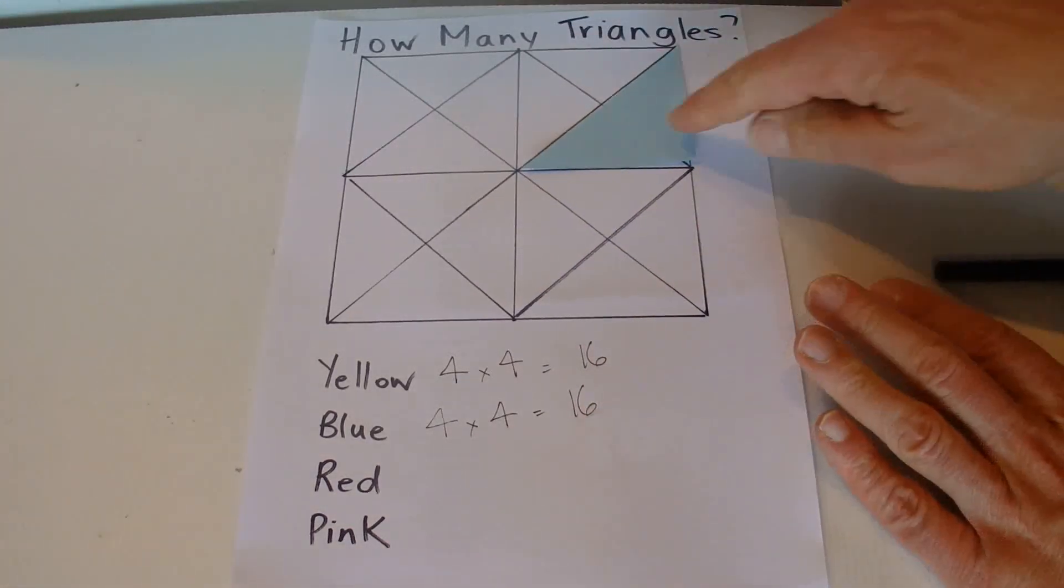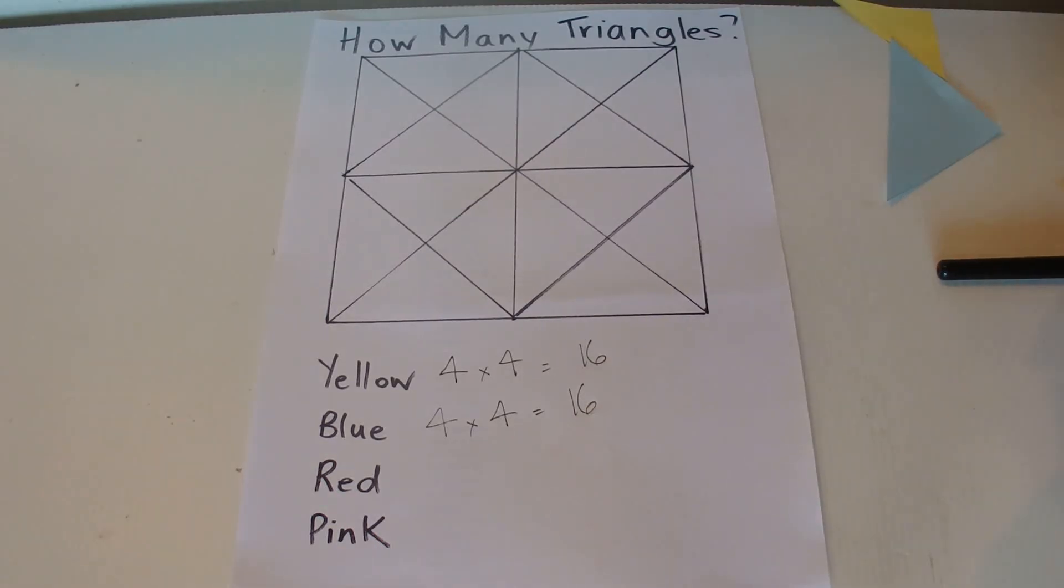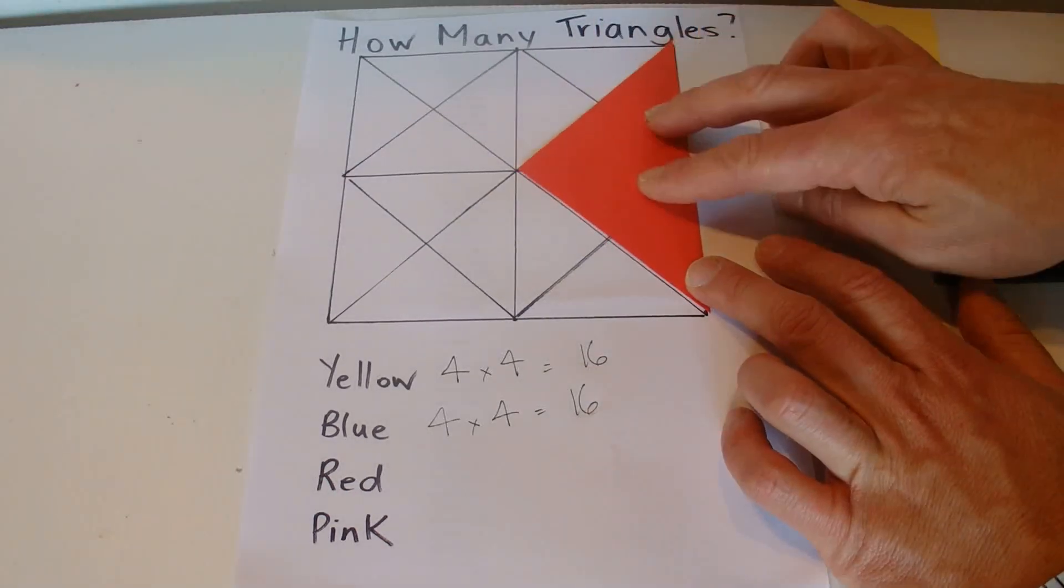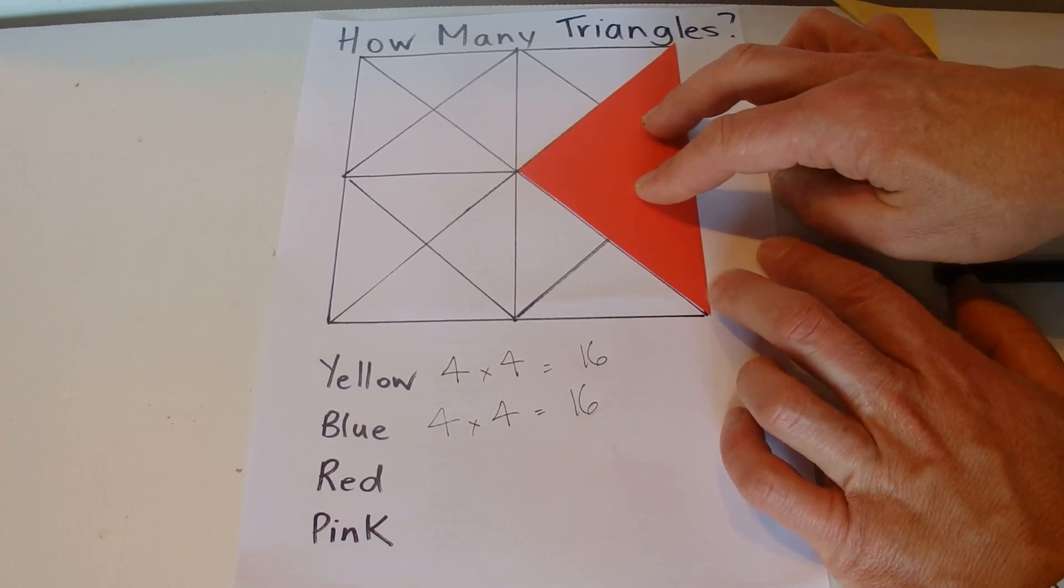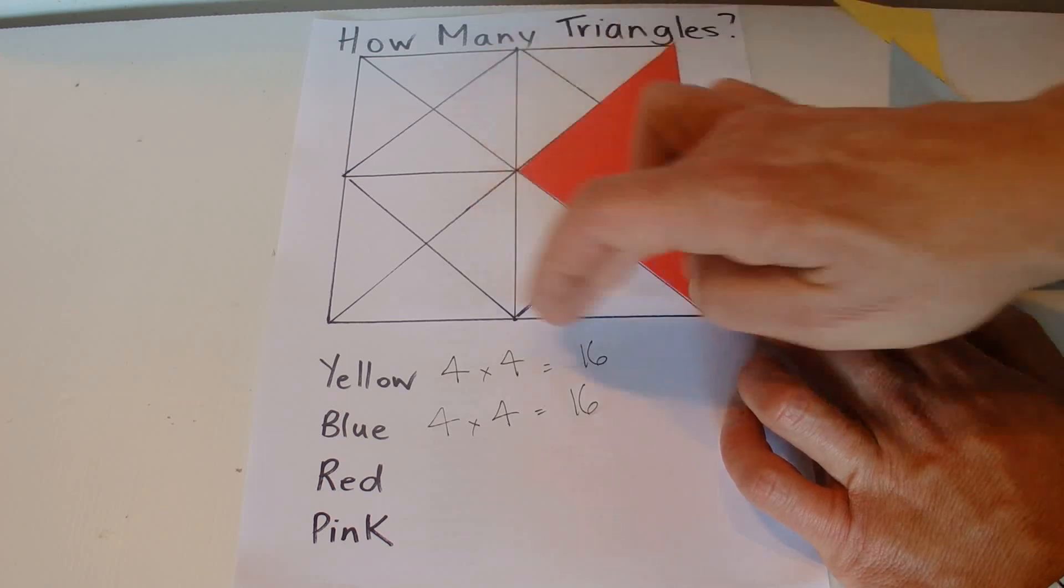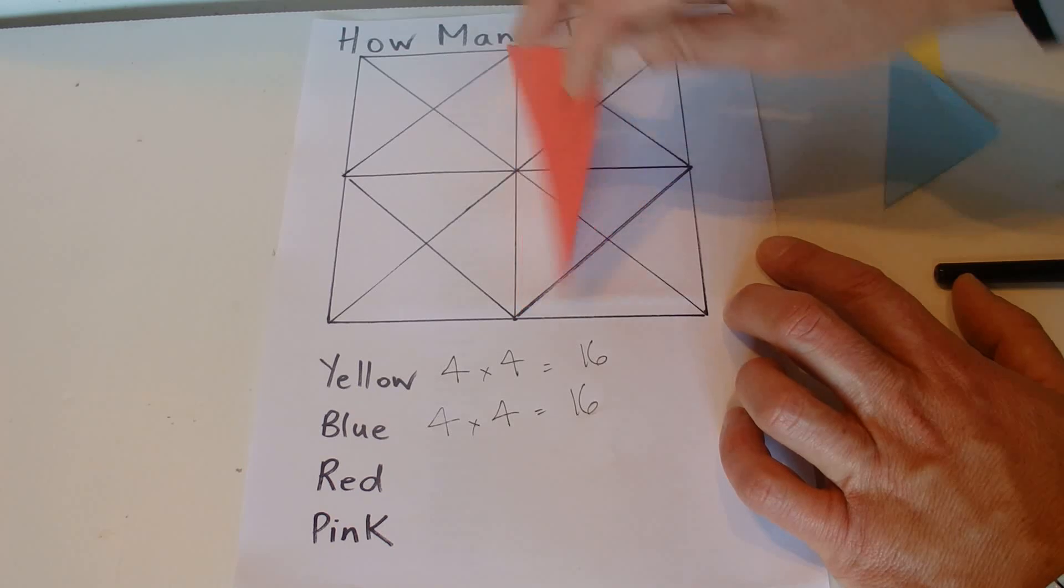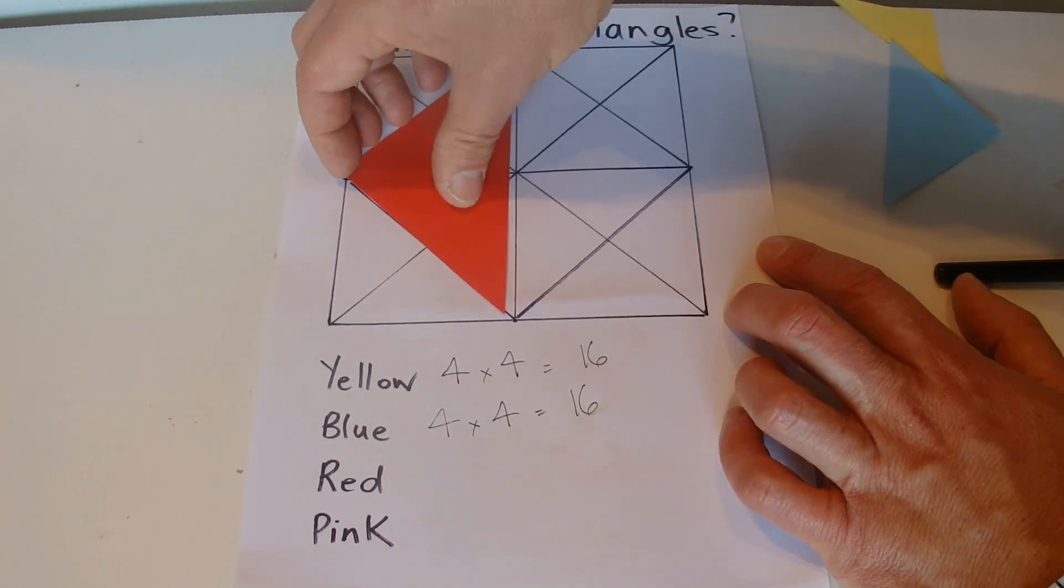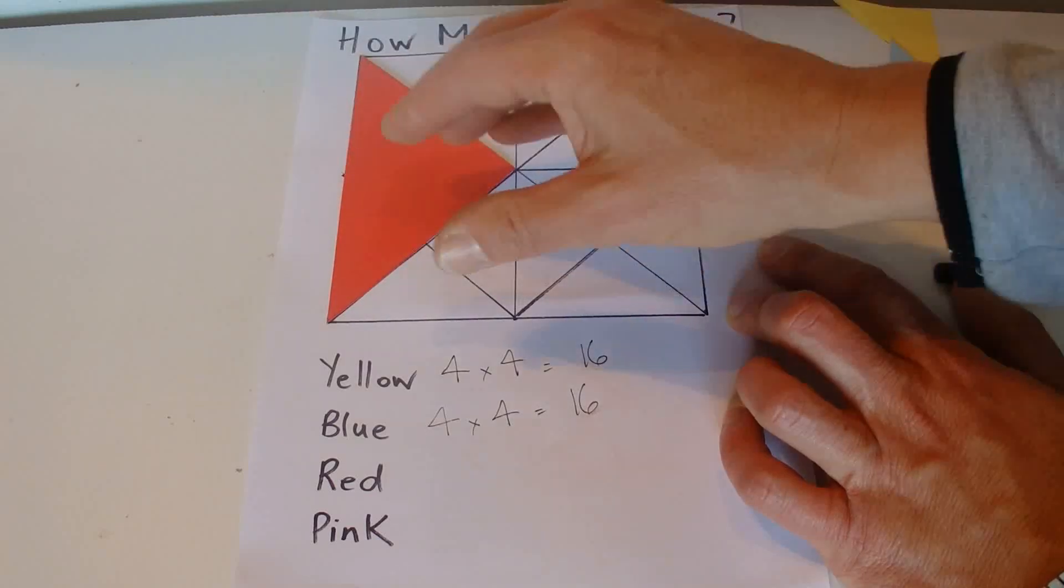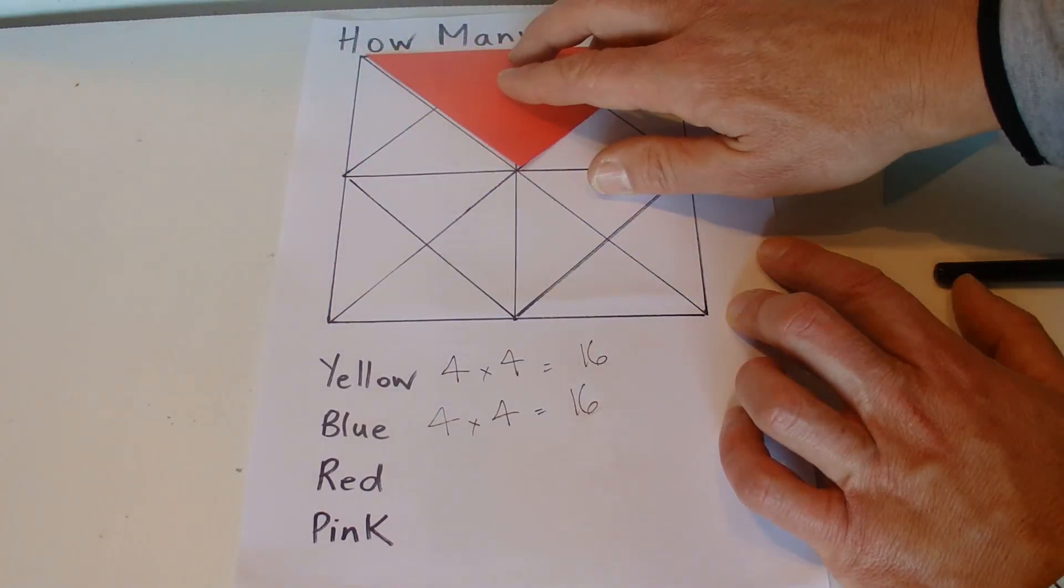Now the next triangle is the red, and you can see there is one there in this rectangle on that side, and then there's two, and then you've got three, and then you've got four. So across that way we've got four.